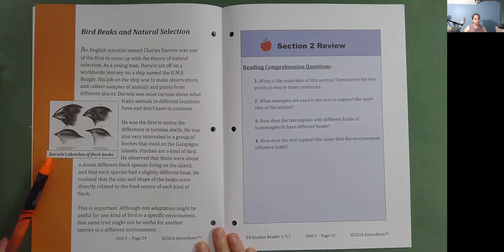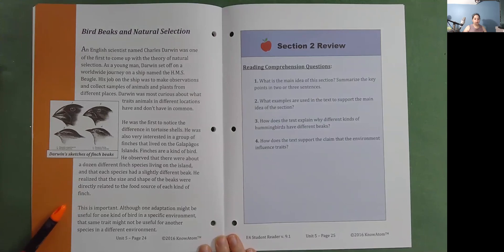He observed that there were about a dozen different finch species living on the island and that each species had a slightly different beak. He realized that the size and shape of the beaks were directly related to the food source of each kind of finch. This is important. Although one adaptation might be useful for one kind of bird in a specific environment, that same trait might not be useful for another species in a different environment. Darwin's sketches of finch beaks.